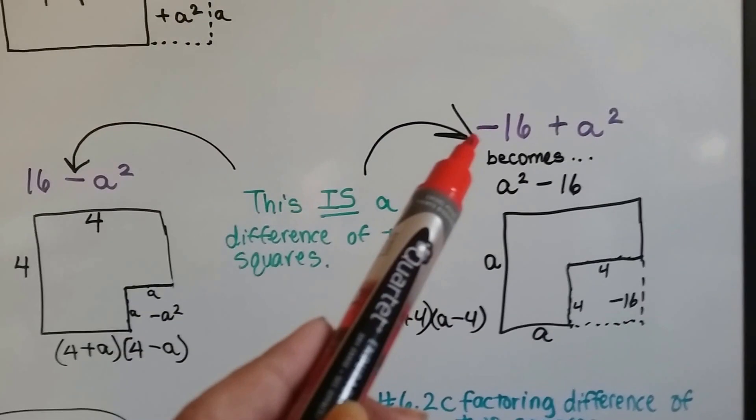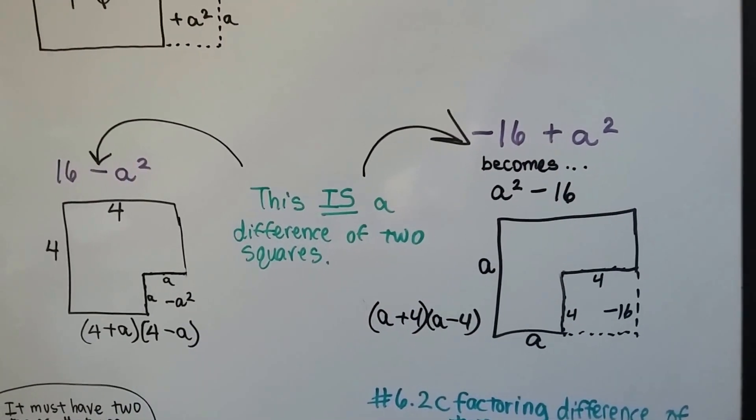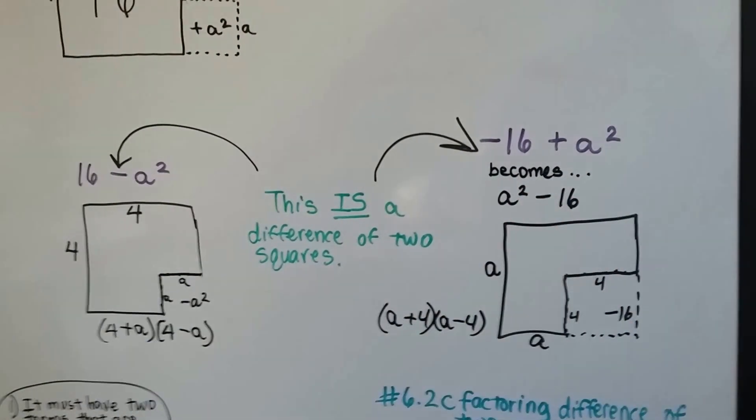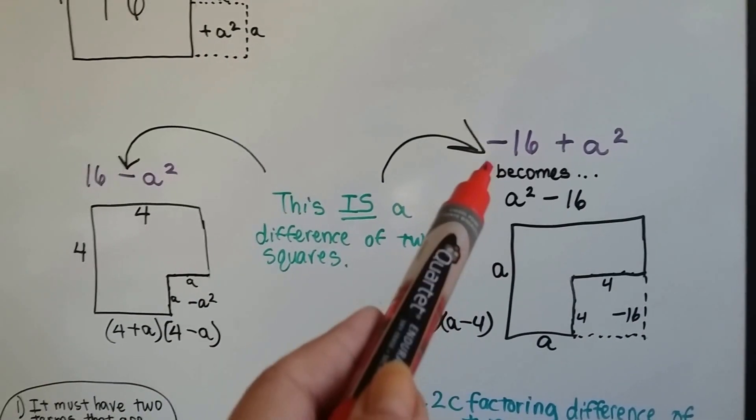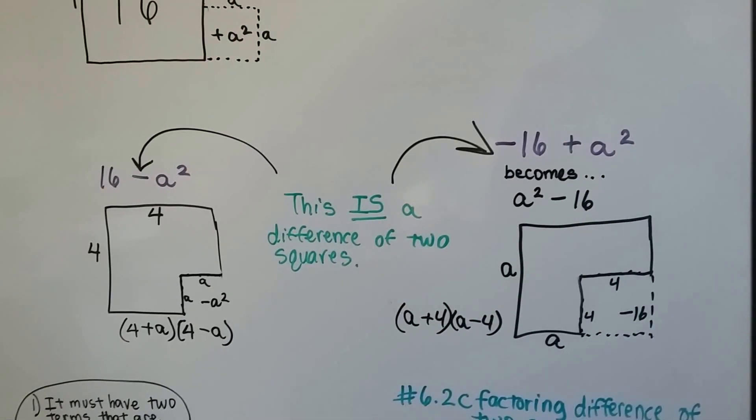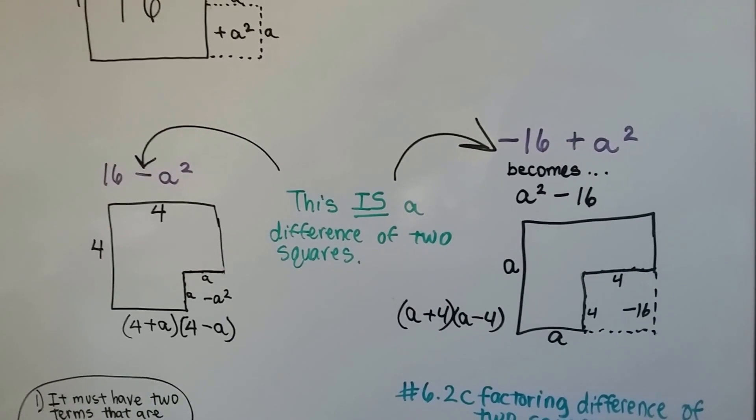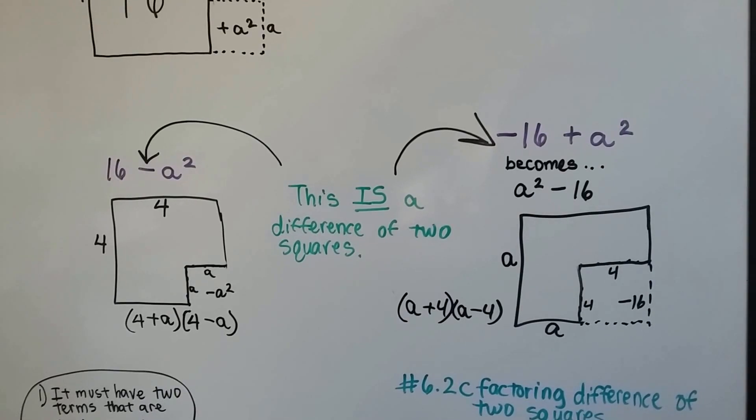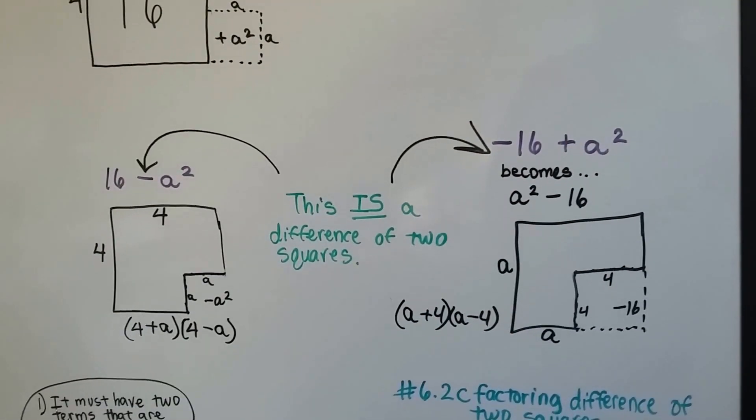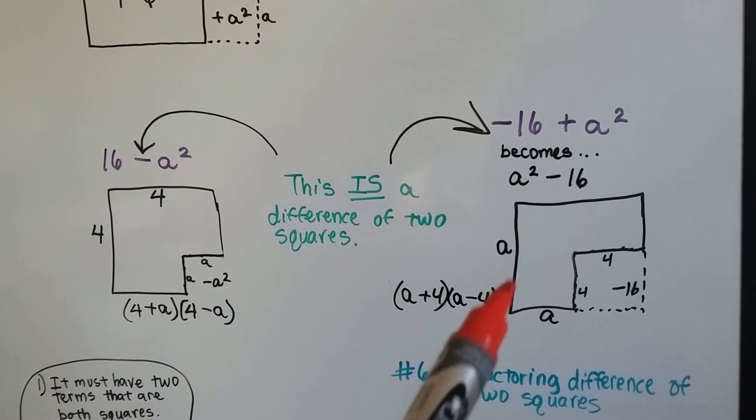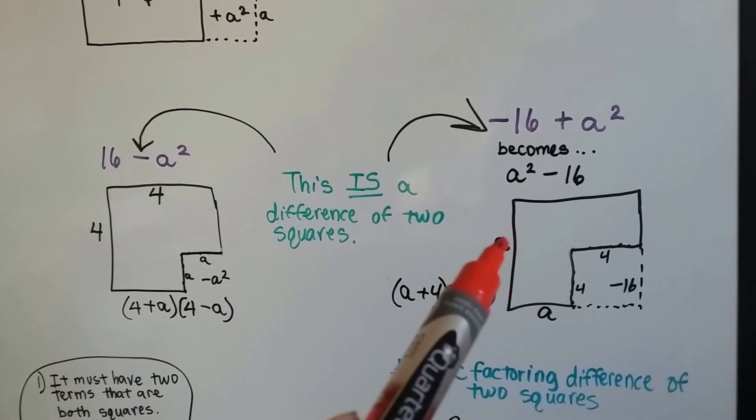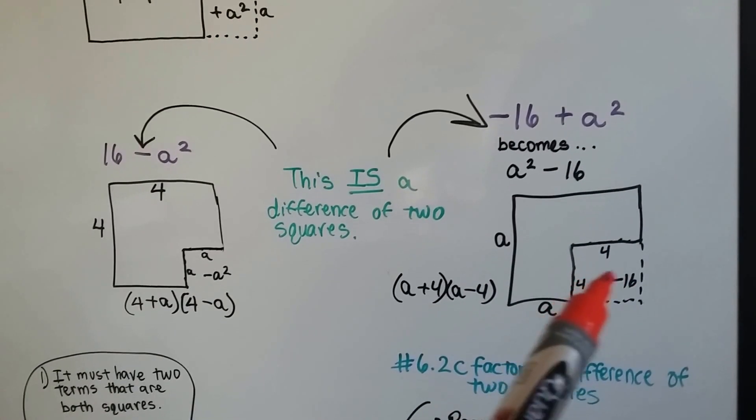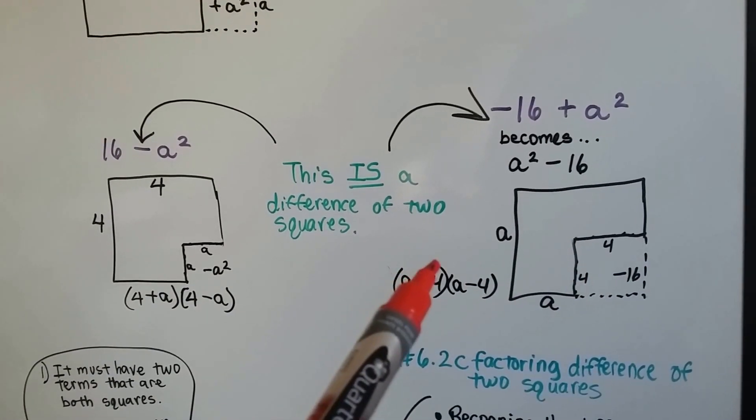And then look at this one. We have a negative 16 plus a squared. Well, we can turn this around. We can make this an a squared minus 16. So if you see that the first one is a negative, and then it's got a plus, it still can be the difference of two squares, because we can rewrite it as a squared minus 16. If they were both negative, then we can't do it. So this would be, this side is a, and this side is a, and we're taking away a 4 times 4. We're taking away a 16. So it would be a plus 4, a minus 4.